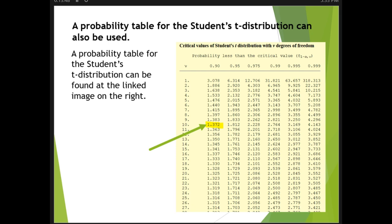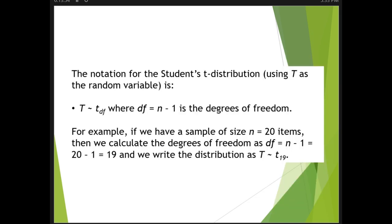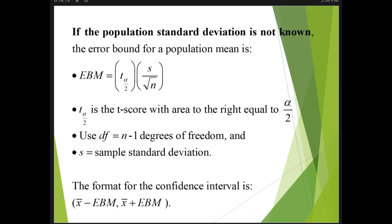The notation for the Student's t-distribution: we use t as the random variable, and df is the degrees of freedom, which equals n minus 1. If the population standard deviation is not known, then the error bound for a population mean is EBM = t_(α/2) × (s/√n). Use df = n-1 degrees of freedom, and s is the sample standard deviation. The format for the confidence interval is (x̄ - EBM, x̄ + EBM).